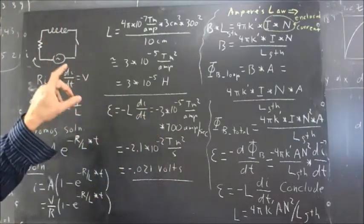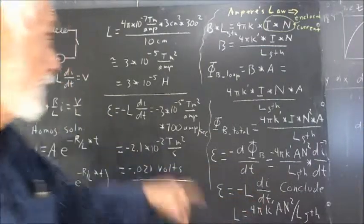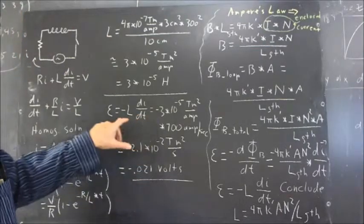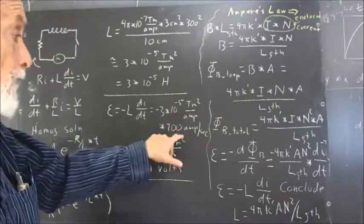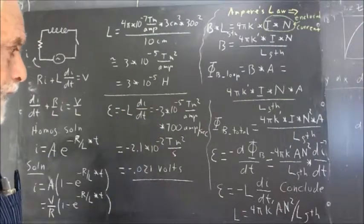Okay, so the EMF then is going to be just negative L di/dt. We've calculated L for this particular inductor, and we multiply that by the 700 amps per second. And we get approximately 2.1 times 10 to the negative 7th.